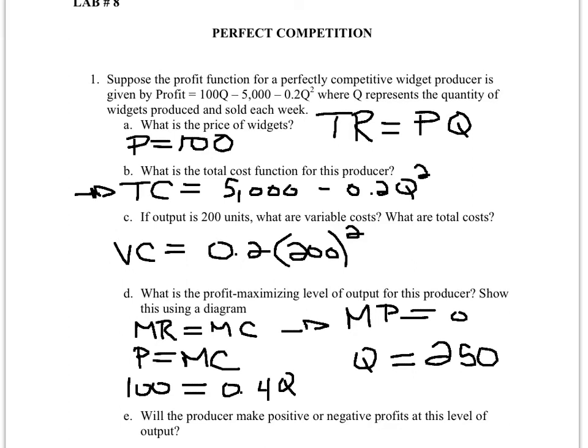The final part of the question asks: will the producers make positive profits? You can simply plug in 250 into the profit equation and you should be able to find whether profits are positive or negative.